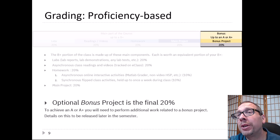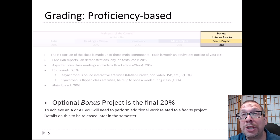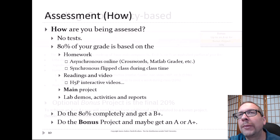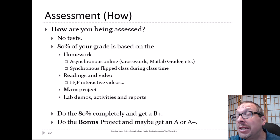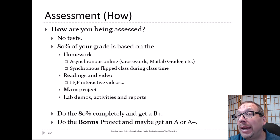Students who want to do the bonus project can top up their grade by up to 20%, which can lead to either an A or an A+ in the course. There are no tests in this class. 80% of your grade is based on homework, the interactive videos on eClass, the main project, and the lab activities. The other 20% is the bonus project. Do the first 80% correctly and you walk away with a B+. Do all of it including the bonus project, and you can get an A or A+.